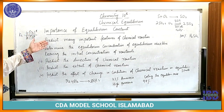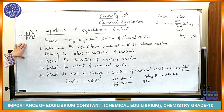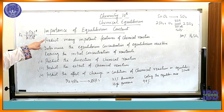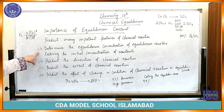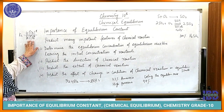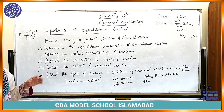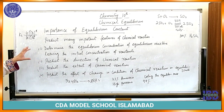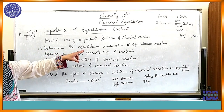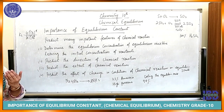How does it help us in industrial chemistry? Kc and the equilibrium constant help us determine the equilibrium concentration of the equilibrium mixture, knowing the initial concentration of the reactants. If we know the initial concentration of any reactant, we can easily determine what the concentration of the equilibrium mixture will be — which contains both reactants and products.